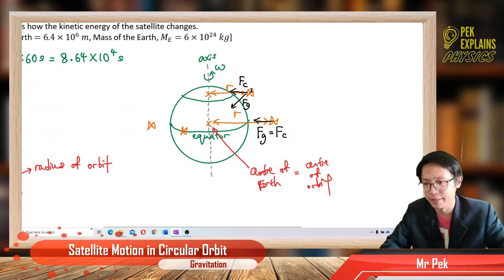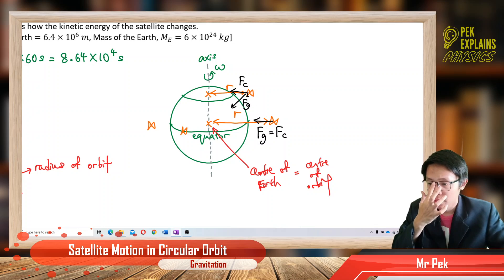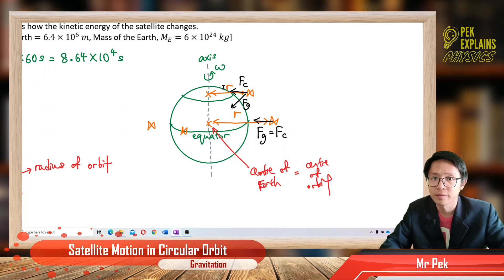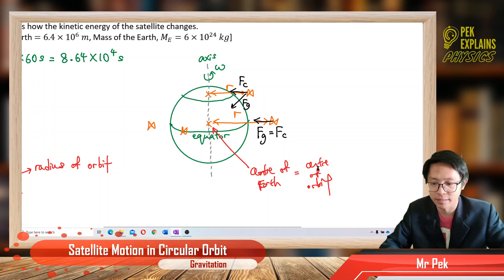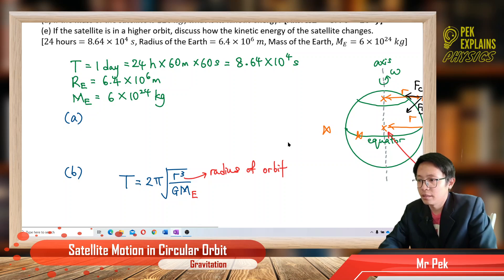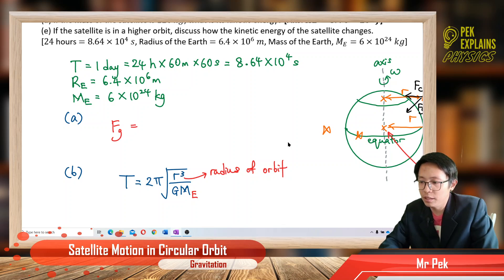But if the satellite is at the northern hemisphere, the center of the orbit and the center of the earth are not the same — they don't share the same center. So the gravitational force and centripetal force are not parallel and not equal. That's why the satellite must be at the equator, so that gravitational force equals centripetal force.